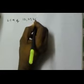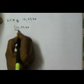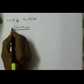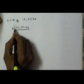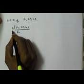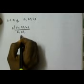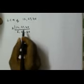Now let's see the division method. Let's find the LCM of 12, 27, and 40. We write 12, 27, and 40, and divide these numbers by a common factor. I am taking 2. When we divide 12 by 2, we get 6. 27 is not divisible by 2, so we keep 27 as it is. When we divide 40 by 2, we get 20.